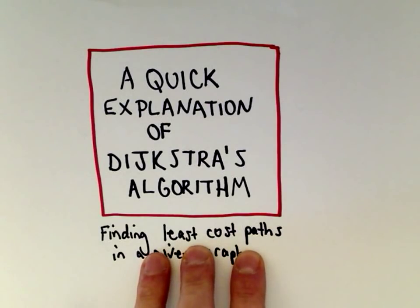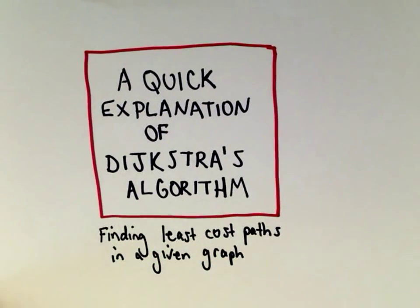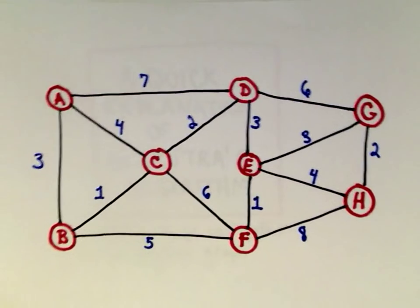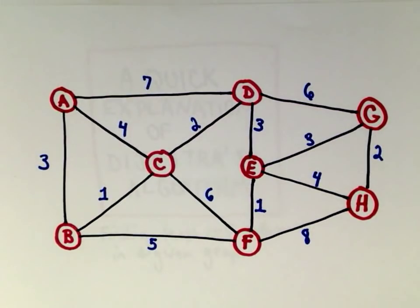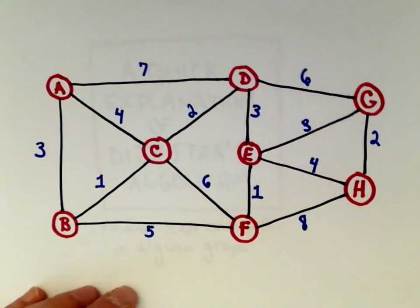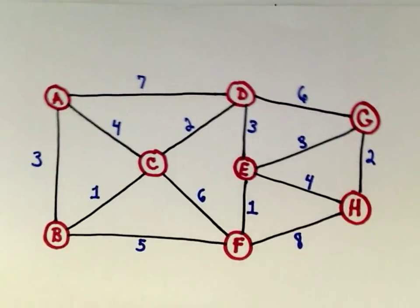What we're going to do is find least cost paths in a given graph. You can think about these graphs as maybe costs in shipping goods from one point to another. I'm probably going to talk about it in terms of distances, just because that's the way I've thought about it, so instead of saying cost I'm just going to use distance.